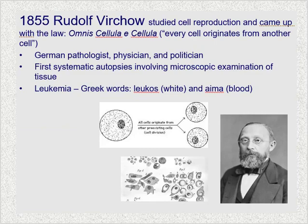In 1855, Rudolf Virchow, another German scientist, studied cell reproduction and developed the law Omnis Cellula E Cellula, which means every cell originates from another cell. He was also the first scientist to perform systematic autopsies using microscopic examination of tissue to discover leukemia — a progressive type of cancer in which the bone marrow and other blood-forming organs produce increased numbers of immature and abnormal leukocytes, or white blood cells. These increased numbers suppress the production of normal blood cells, leading to anemia and other issues.